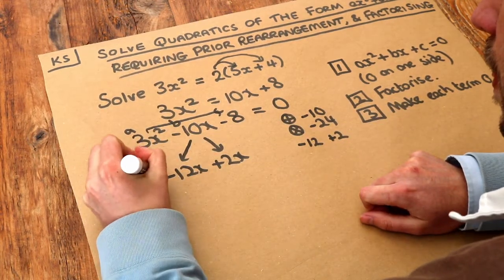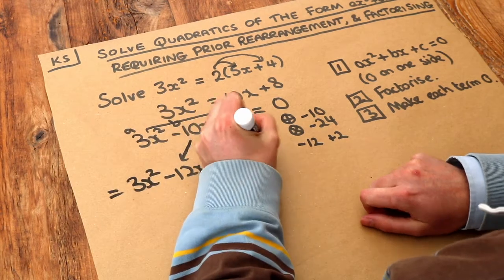So all we've done is just split that into a sum of two terms. We've still got the other terms there, and we've got the minus 8 here.